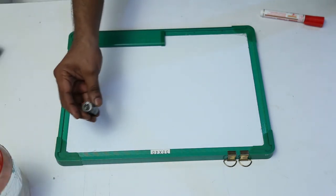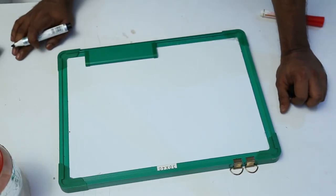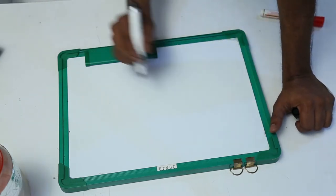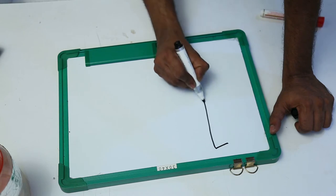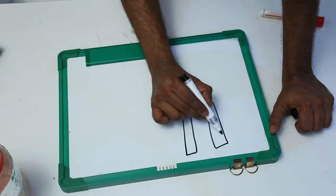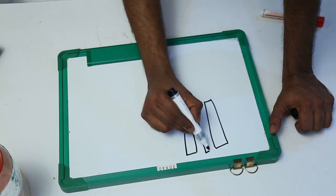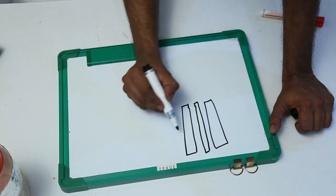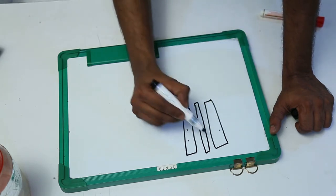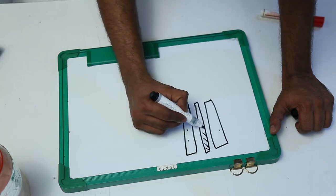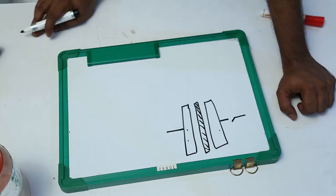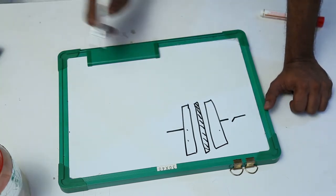A capacitor is a basic electronic component. You can see capacitors in almost all circuits. A capacitor is basically two conducting plates separated by a dielectric or insulator. Conducting plates means these can conduct electricity - these two plates can conduct electricity - and this is a dielectric or insulator, it won't conduct electricity. This is the capacitor.